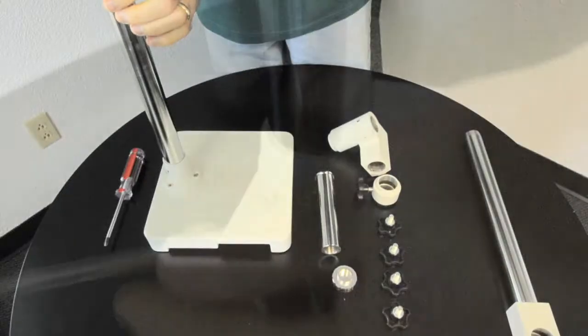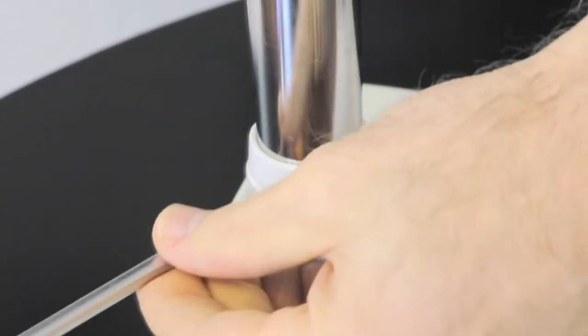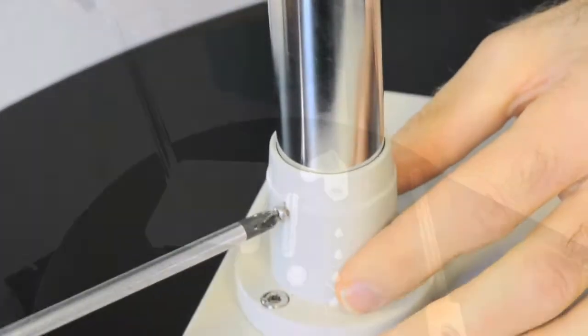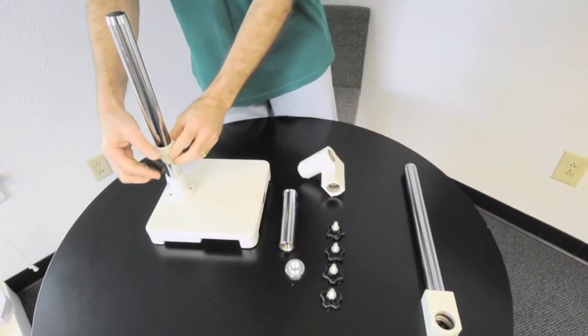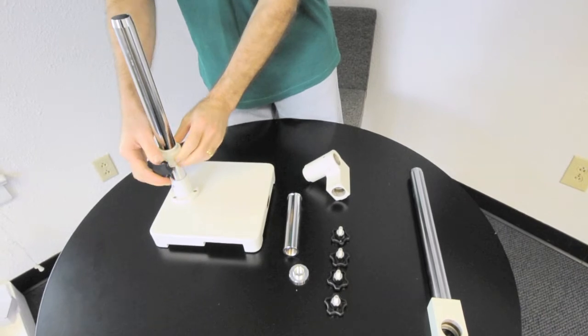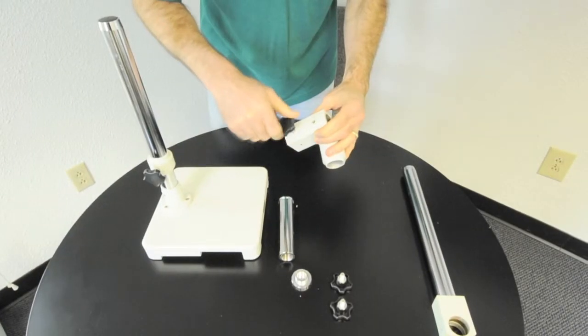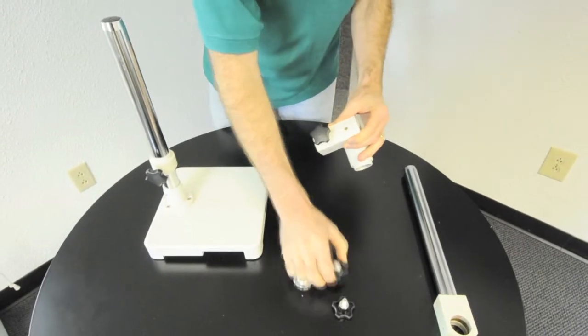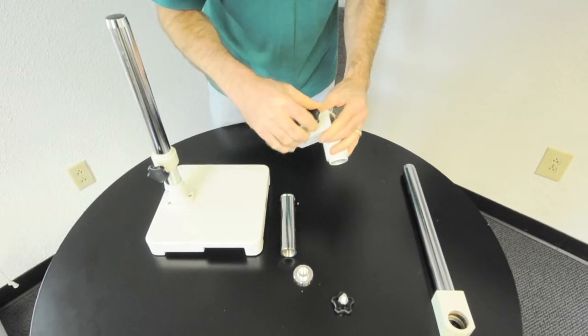The vertical post screws firmly into the base and then is retained by a supplied Phillips head screw. The safety collar and attachment block then slide down over the vertical post. These are fixed in place by the provided screw knobs.